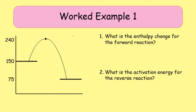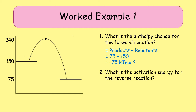Here are some worked examples. The diagram is given with numbers representing the energy levels of the reactants, products, and activated complex. The first question asks for the enthalpy change for the forward reaction: that is products minus reactants, so 75 minus 150, which gives minus 75 kilojoules per mole — an exothermic reaction, as expected since the products have lower energy than the reactants.